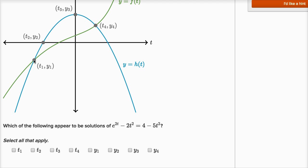So for example, at t1, we see at this point right here, t1, y1. So this tells us f of t1 is equal to h of t1 which is equal to y1.